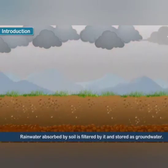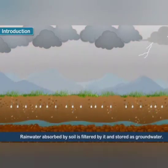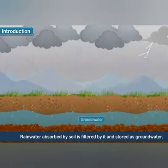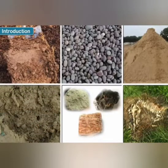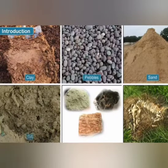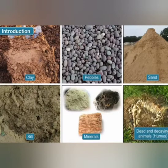Rainwater absorbed by soil is filtered by it and stored as groundwater. Soil consists of fine rock particles in the form of sand, silt, clay, and pebbles. It also contains decaying plant and animal remains, air, and water.